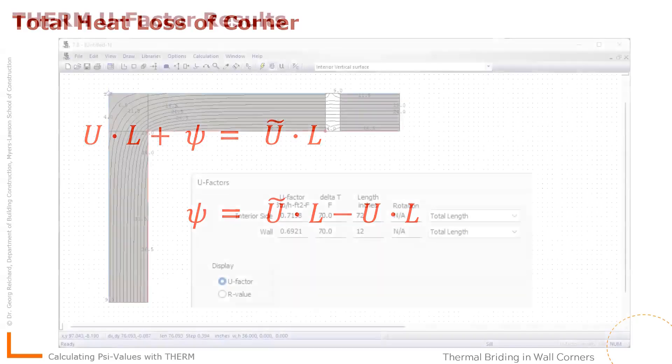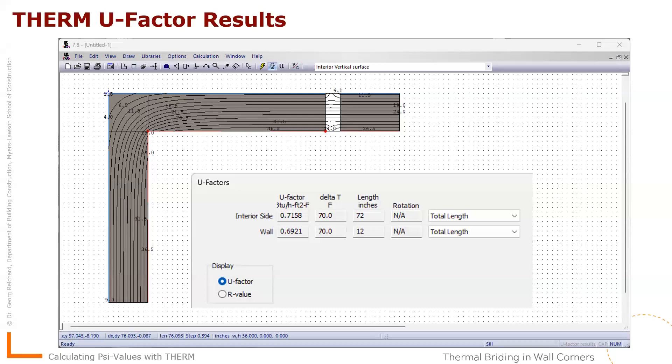So in our example, if we go back here, we will have to write then that our Psi value is, first of all, the total loss that exists. So the total loss is defined by 0.7158 as the conductance, the average conductance in the corner multiplied with the length that we have here. And we use, we set the tag for both of those legs and we can pick up the actual length. And you should check there that it's correct where you applied it and you can see it's 72 inches.